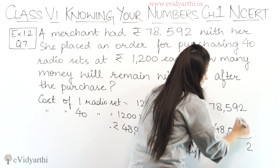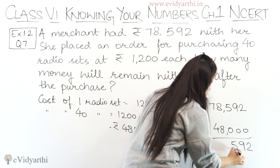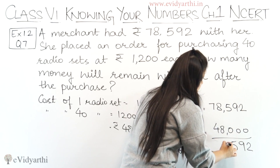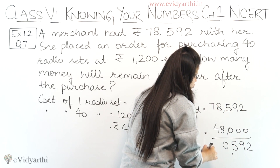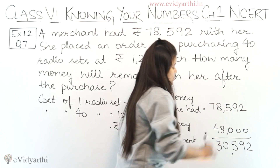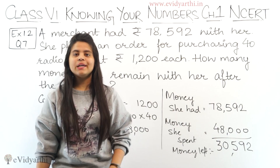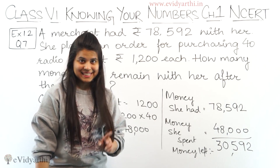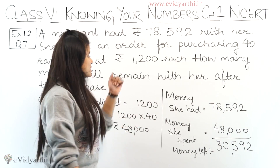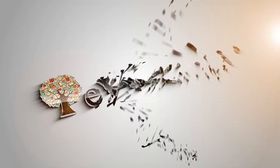So let's calculate. 2 minus 0 is 2. 9 minus 0 is 9. 5 minus 0 is 5. 8 minus 8 is 0. And 7 minus 4 is 3. So Rs. 30,592 is left with her. So this was question number 7. Now let's come to the next question. That's it.